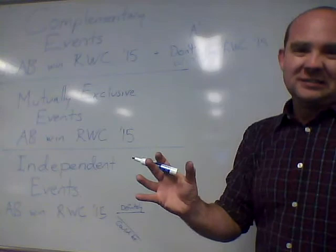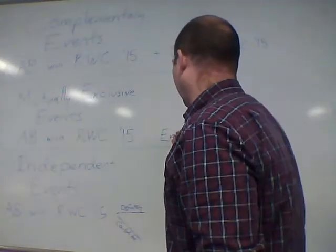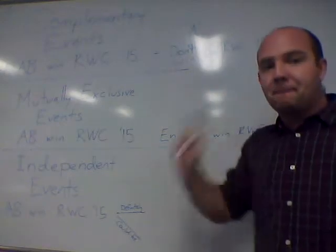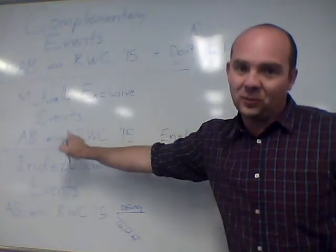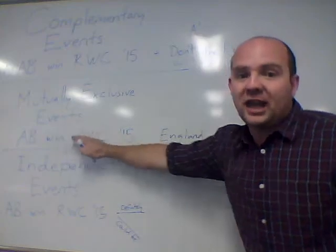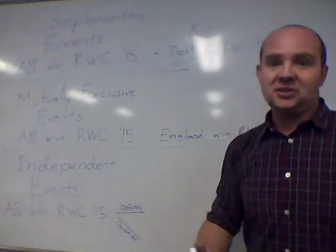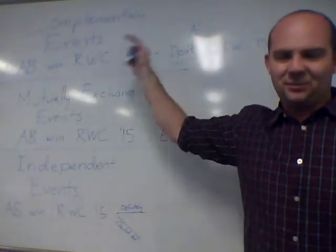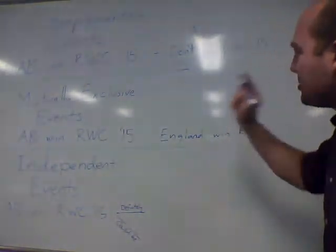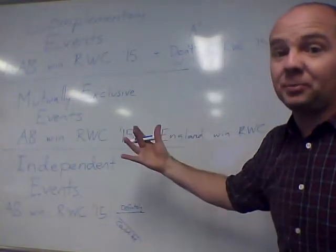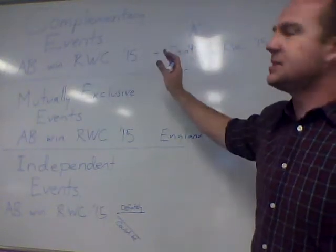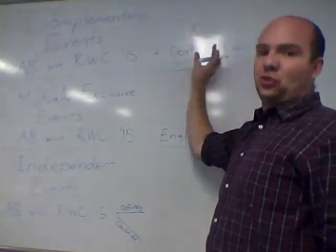How about — God forbid — England wins the Rugby World Cup. That would be a terrible event, but it would also be mutually exclusive with the All Blacks winning the Rugby World Cup. You cannot have both, but there are other options: Australia could win, or Scotland, or Tonga, or somewhere. So: mutually exclusive means can't both happen, something else could happen. Complementary means one or the other — effectively this happening and it not happening.